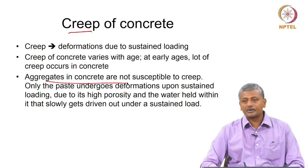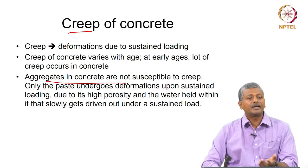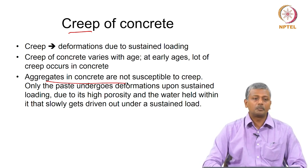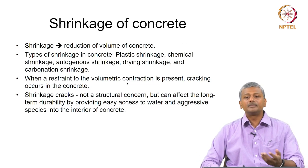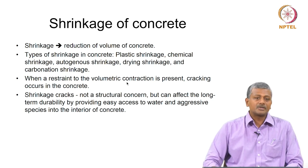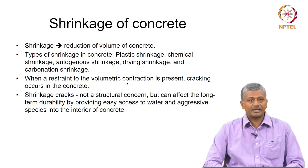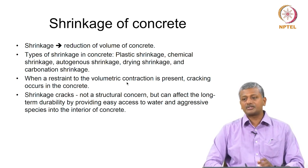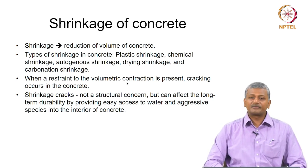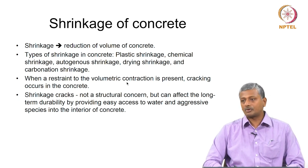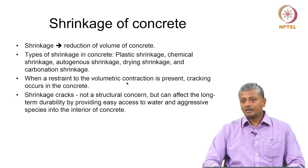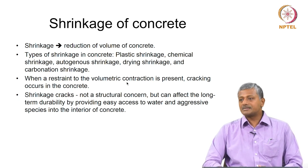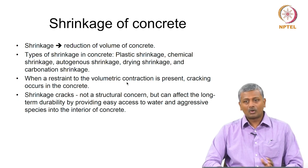Aggregates are not susceptible to creep because they are much stiffer than the paste phase. Therefore, the higher the volume of aggregates in concrete, the more resistant the concrete is to creep deformations. Similarly, shrinkage occurs because concrete has moisture that eventually dries out in a drying environment. It is the paste that is susceptible to shrinkage, not the aggregate. Thus, the higher the aggregate content, the lesser the shrinkage. Creep and shrinkage inevitably occur in any concrete member, with moisture content being the primary defining factor for both.